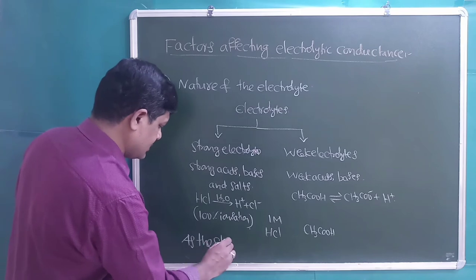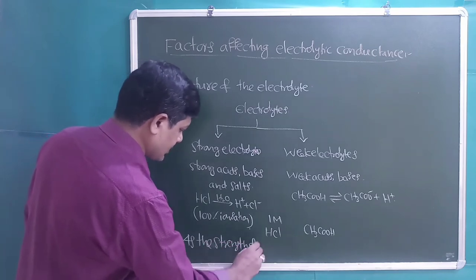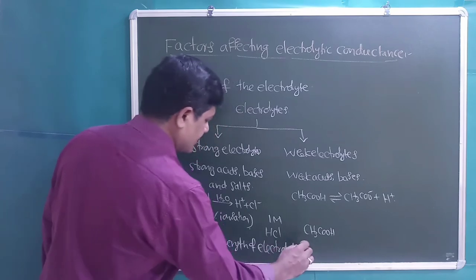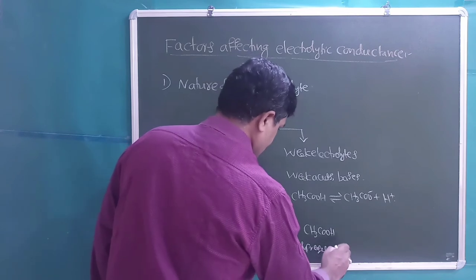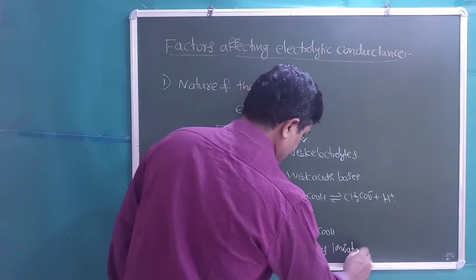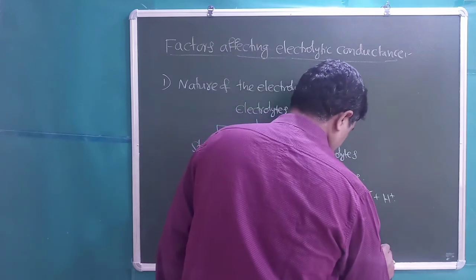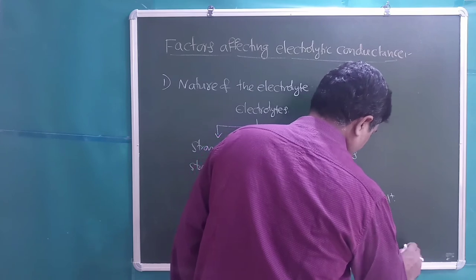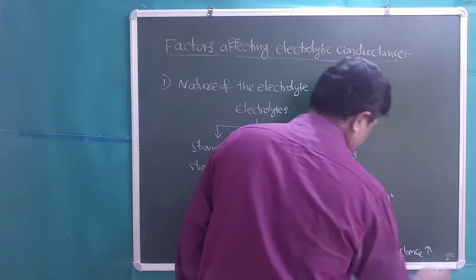Acetic acid, being a weak acid, attains equilibrium with its ions, whereas HCl undergoes 100% ionization, so it has a maximum number of ions and conductance will be more for the strong electrolyte. As the strength of the electrolyte increases, ionization increases, and conductance also increases.